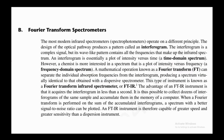The most modern infrared spectrophotometers operate on a different principle. The design of the optical pathway produces a pattern called an interferogram — a complex wave-like signal that contains all the frequencies that make up the infrared spectrum. An interferogram is essentially a plot of intensity versus time and is also called a time-domain spectrum. However, a chemist is more interested in a frequency-domain spectrum — a plot of intensity versus frequency.